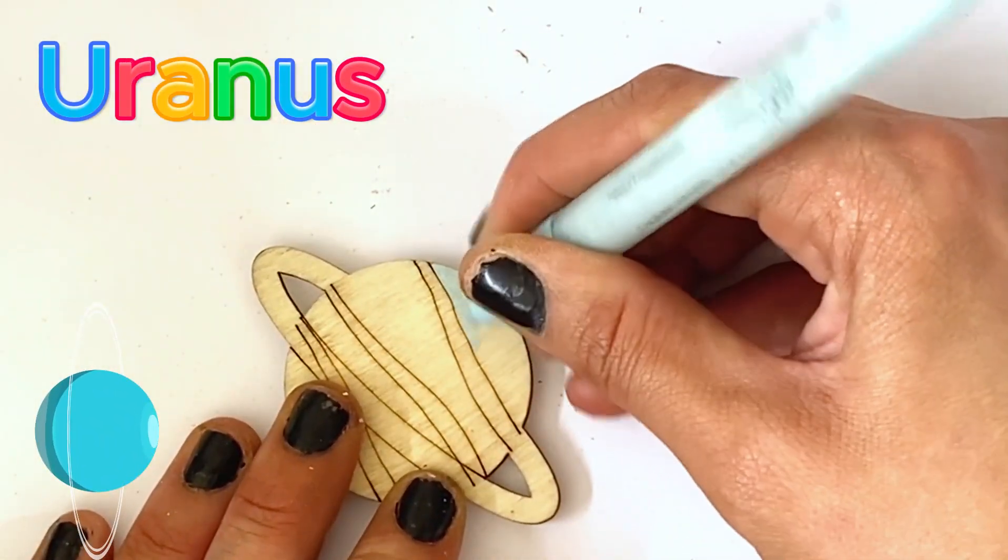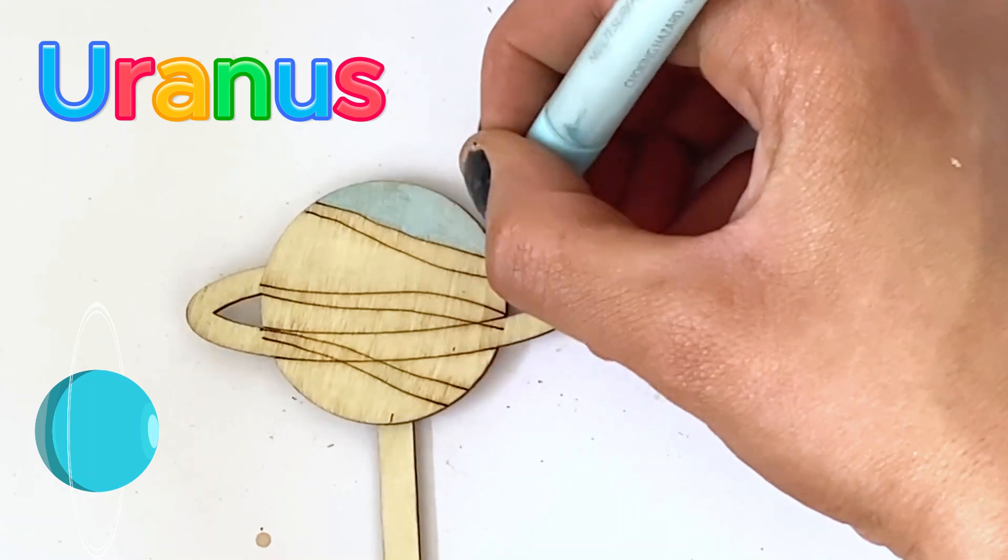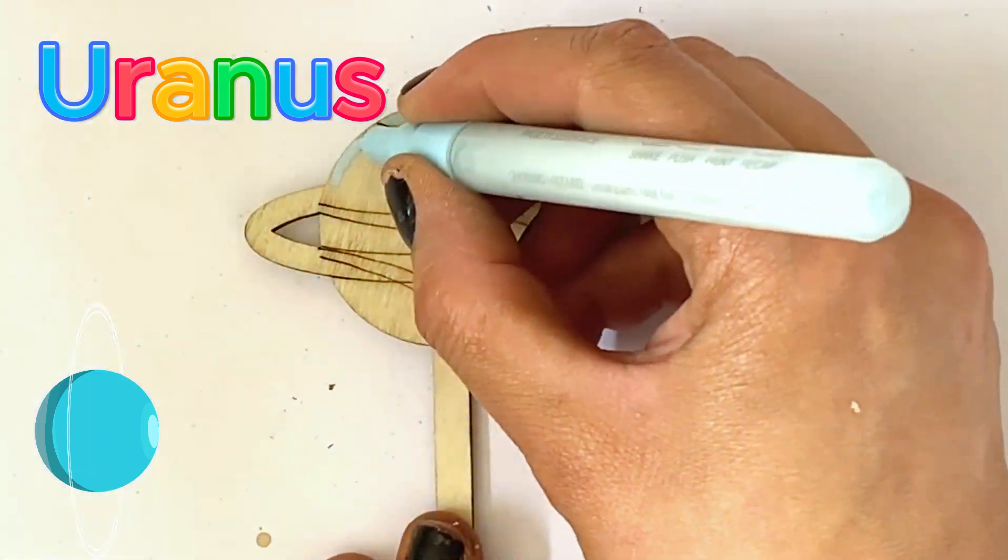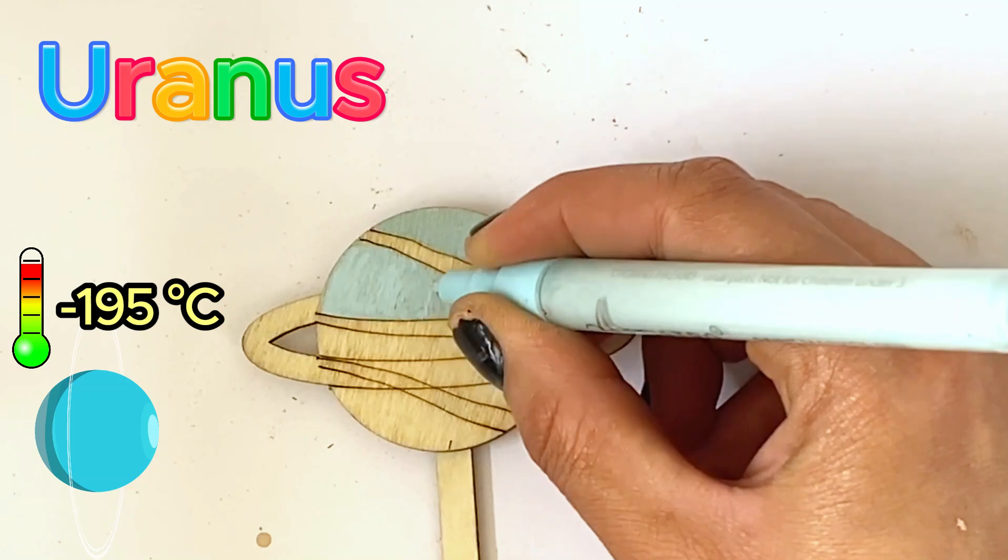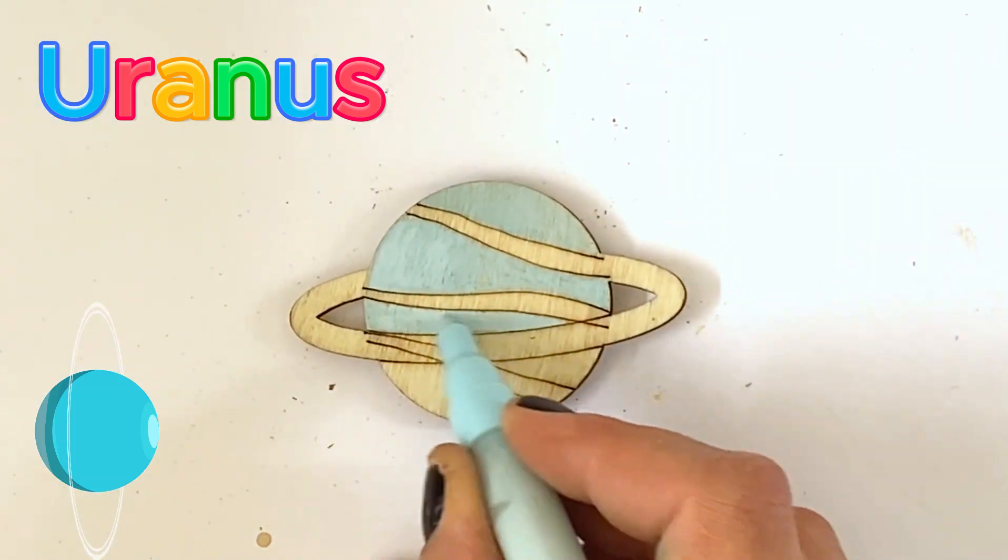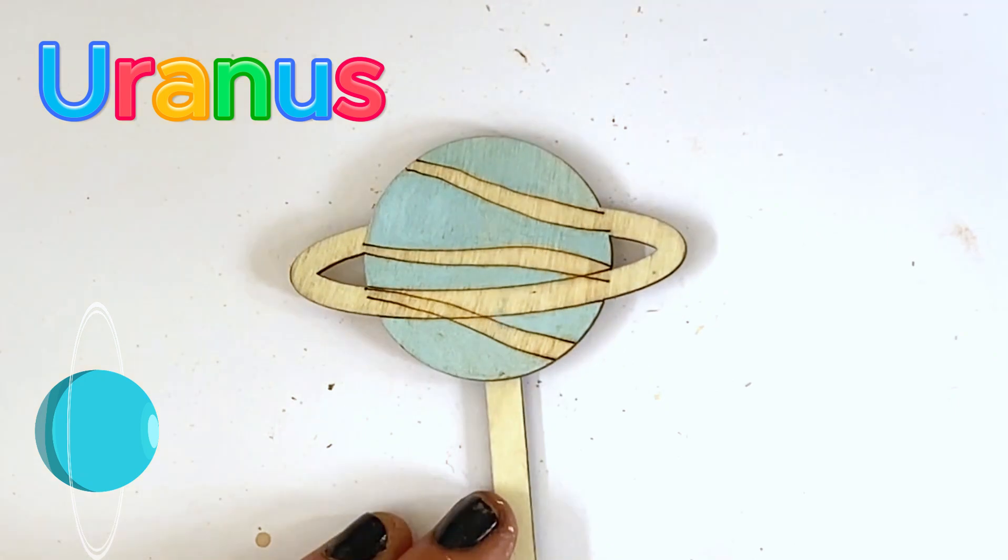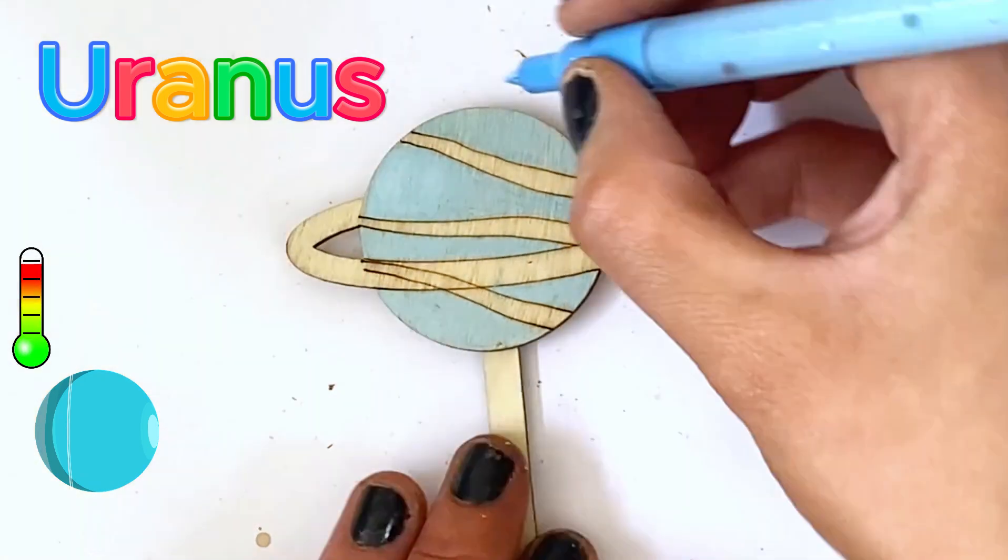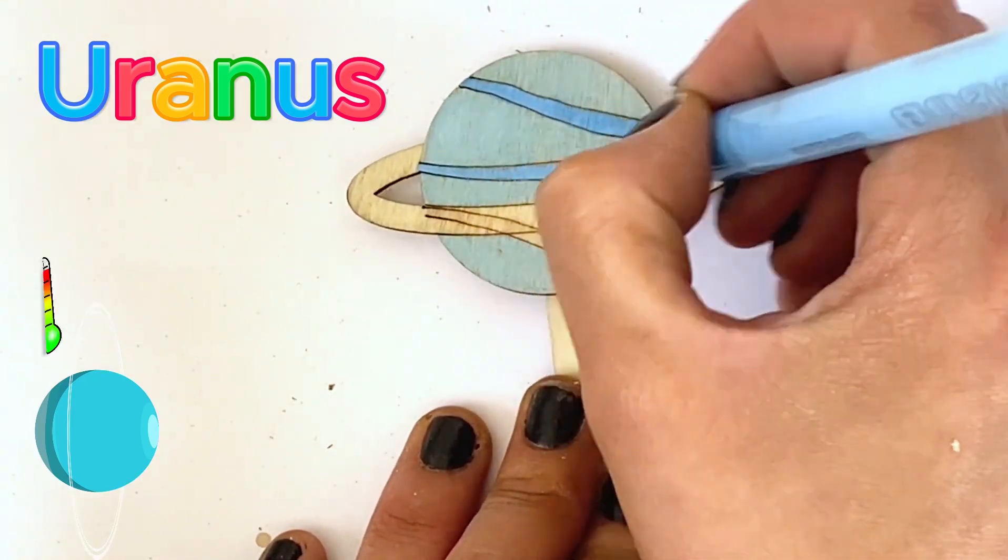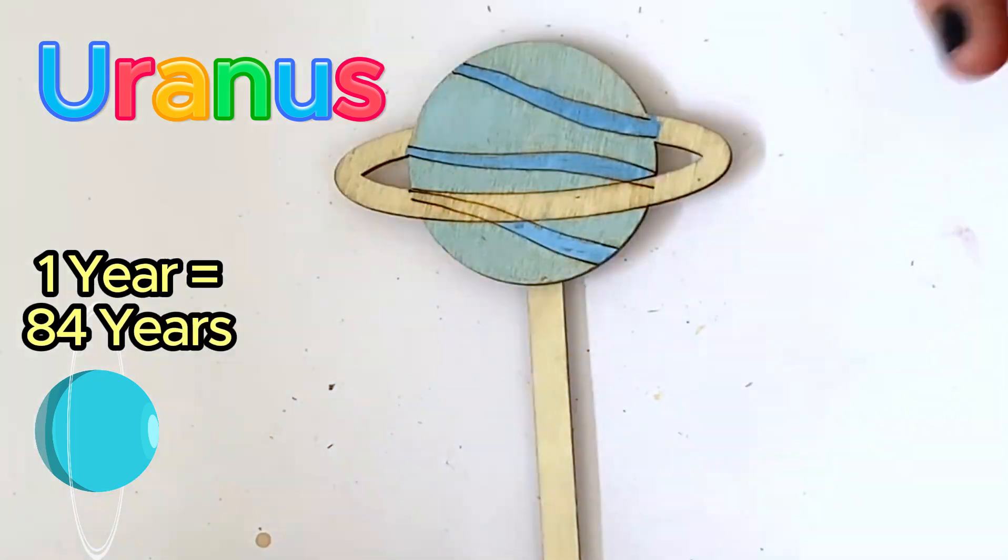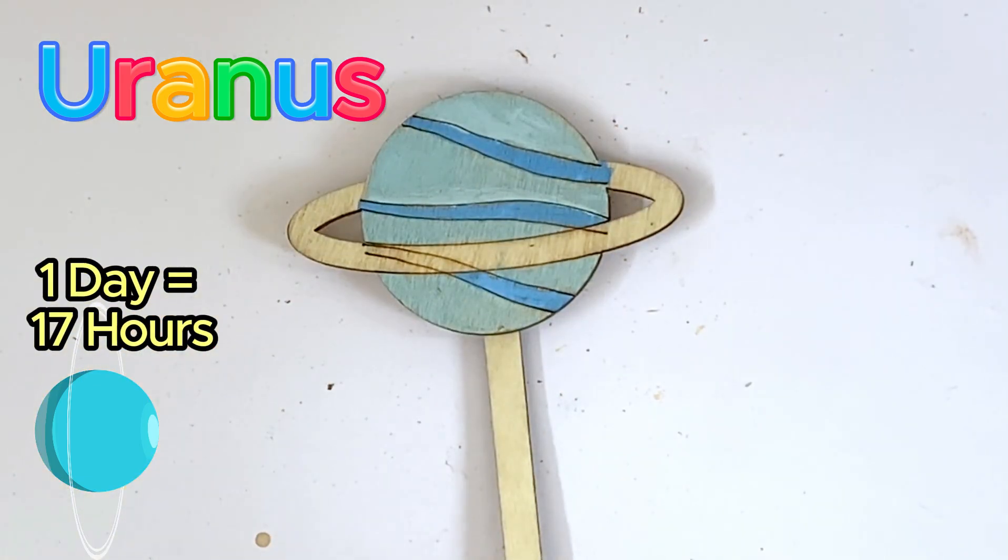The next planet we're going to paint is Uranus. Uranus is the seventh planet from the Sun and was the first planet found with a telescope. Uranus is the coldest planet in our entire solar system, with an average temperature of around minus 195 Celsius. Even though the last planet in our solar system has a colder average temperature, Uranus is still classified as the coldest because the coldest ever temperature measured on Uranus was minus 224.2 Celsius. It takes roughly 84 years for Uranus to orbit the Sun one time. And one axis rotation or day on Uranus is approximately 17 hours.